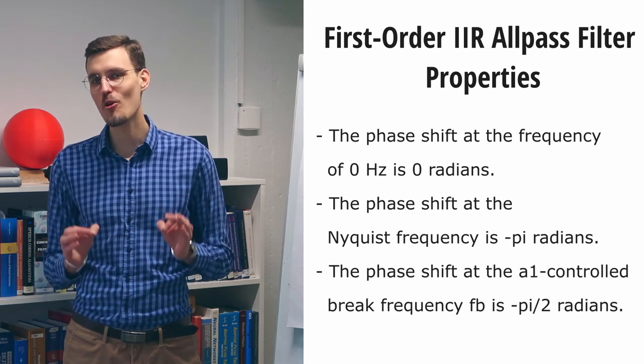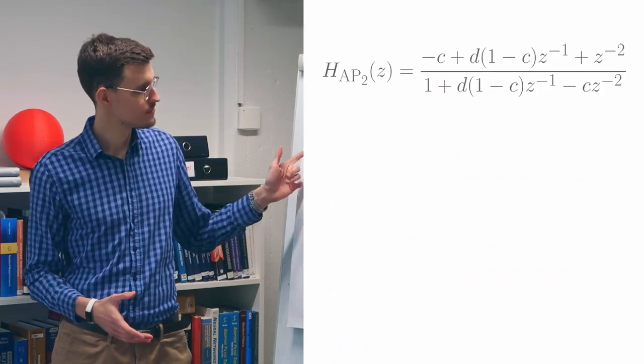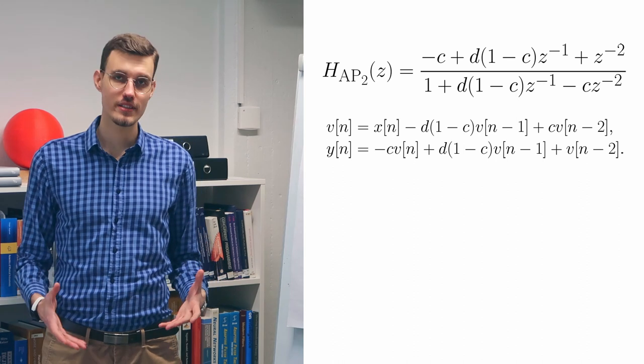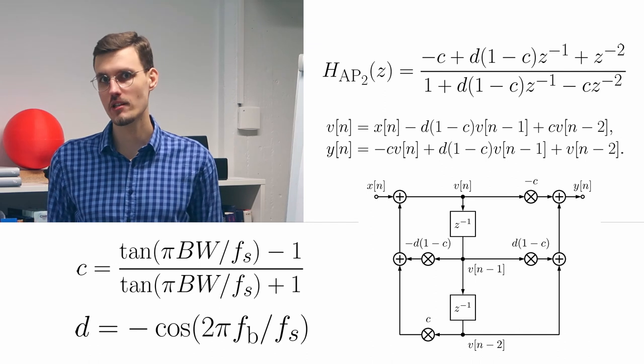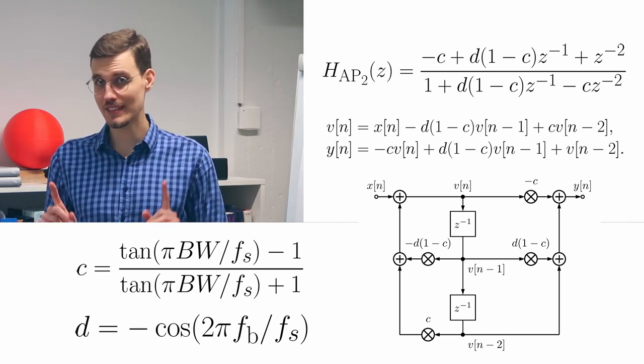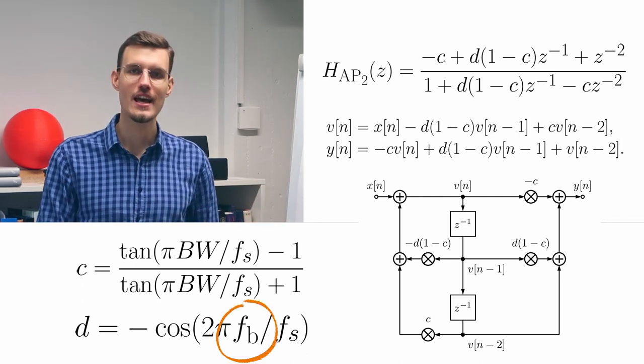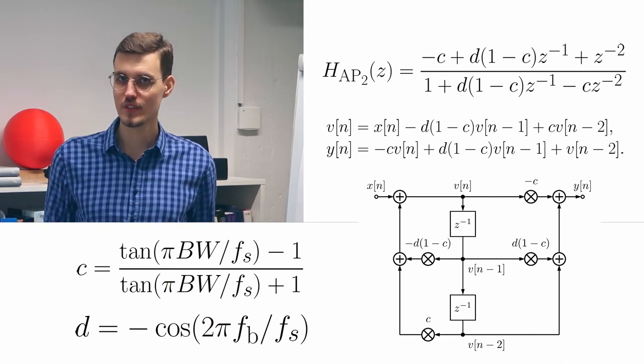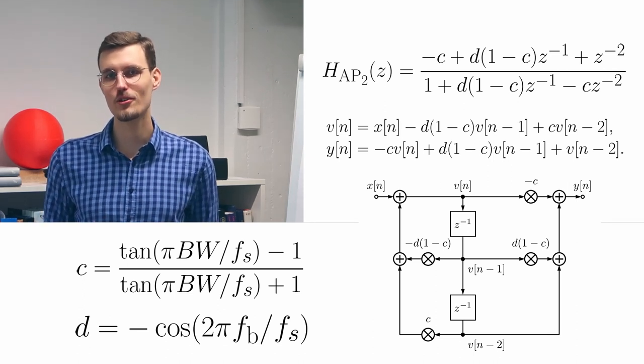Now, let's discuss the even more powerful second-order IIR ALLPASS filter. The second-order ALLPASS filter has the following transfer function. And the following difference equation. And the following block diagram. The C and D coefficients can again be derived using the bilinear transform. But this time, they allow us to separately control the break frequency and the bandwidth, so the steepness of the phase response curve.